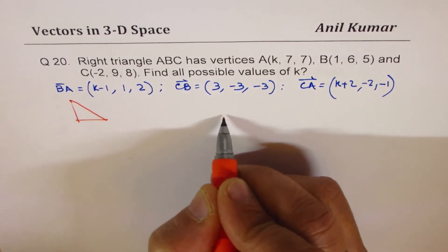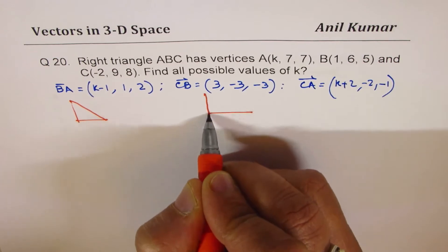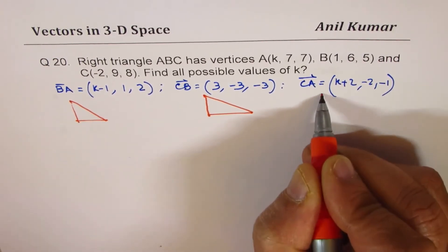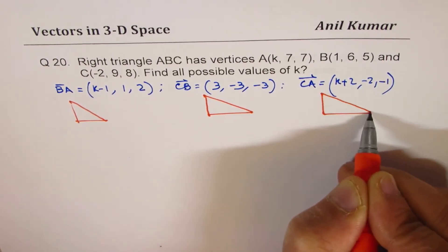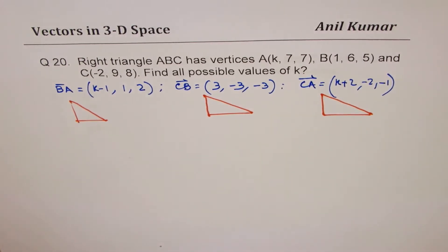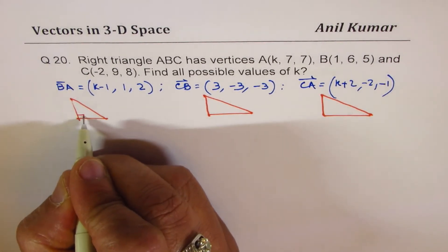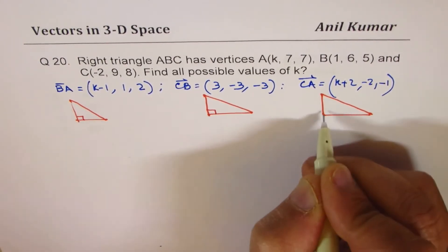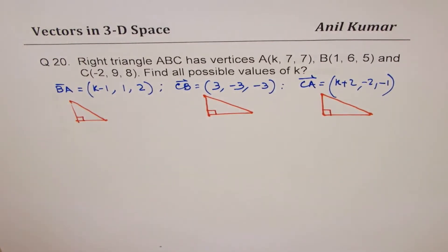So we have three possible situations. Let me just make three different triangles here. So what are these situations? We could have right angles at A, we could have right angles at B, we could have right angles at C. These are the three situations.